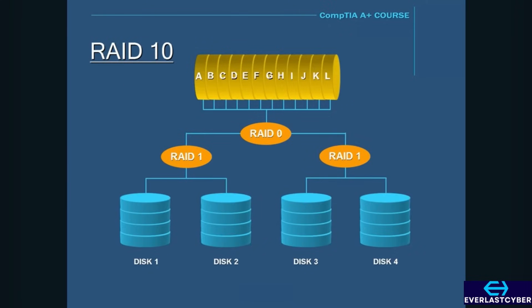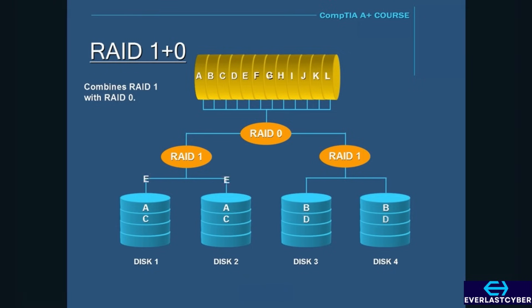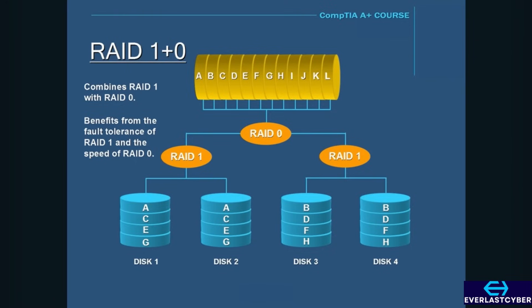RAID 10 is basically what the name says — it combines RAID 1 and RAID 0 together, and you need a minimum of four disks. In a RAID 10 setup, a set of two disks are mirrored using a RAID 1 setup. Then both sets of two disks are striped using RAID 0. So a RAID 10 setup benefits from the fault tolerance of RAID 1 and the speed of RAID 0.